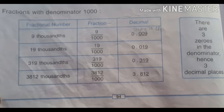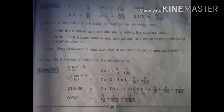To convert your decimal into a fraction, remember the following steps. What steps? Write the number as the numerator, omitting the decimal point. Write 1 in the denominator and add zeros to it equal to the number of decimal places. That's why the decimal point after how many places, that's why we write.